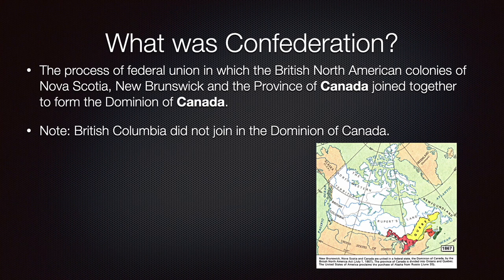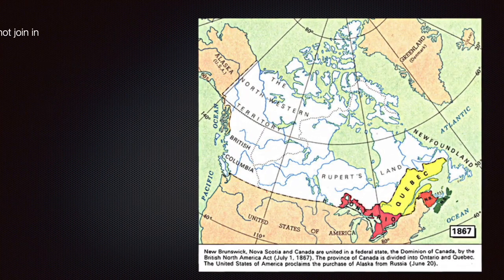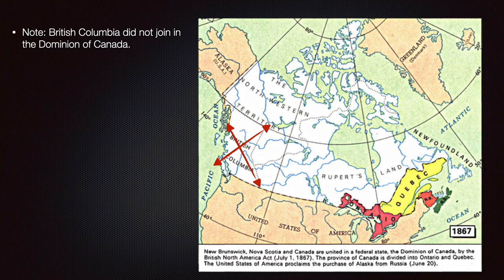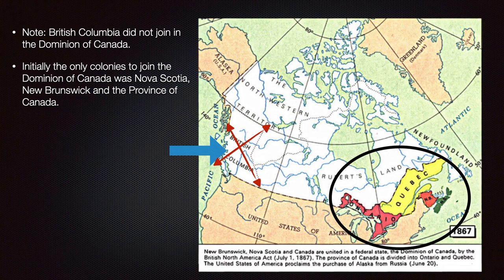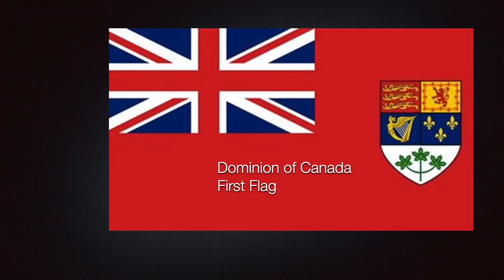Confederation was the federal union where four British colonies joined together to form the Dominion of Canada. Notice that BC did not join the Dominion of Canada. Neither did PEI or Newfoundland. Initially, the only colonies to join were Nova Scotia, New Brunswick, and the Province of Canada, which was Ontario and Quebec. At that time, Manitoba, Alberta, and Saskatchewan were not yet established. Notice the coat of arms representing the four colonies, and the big flag of Britain showing that Britain had its influence over the new country.